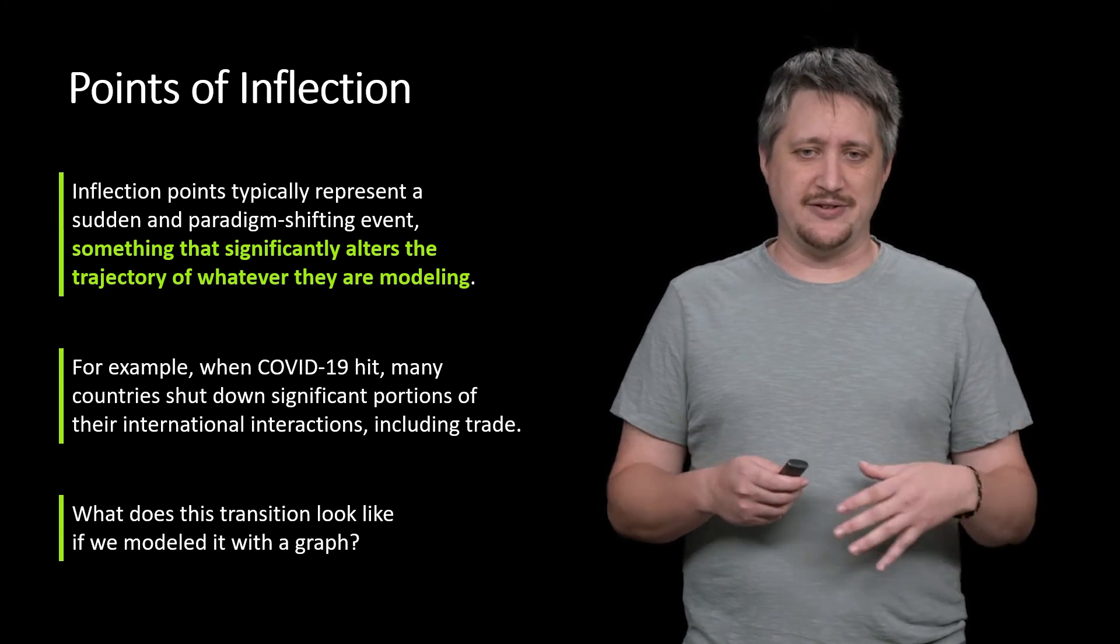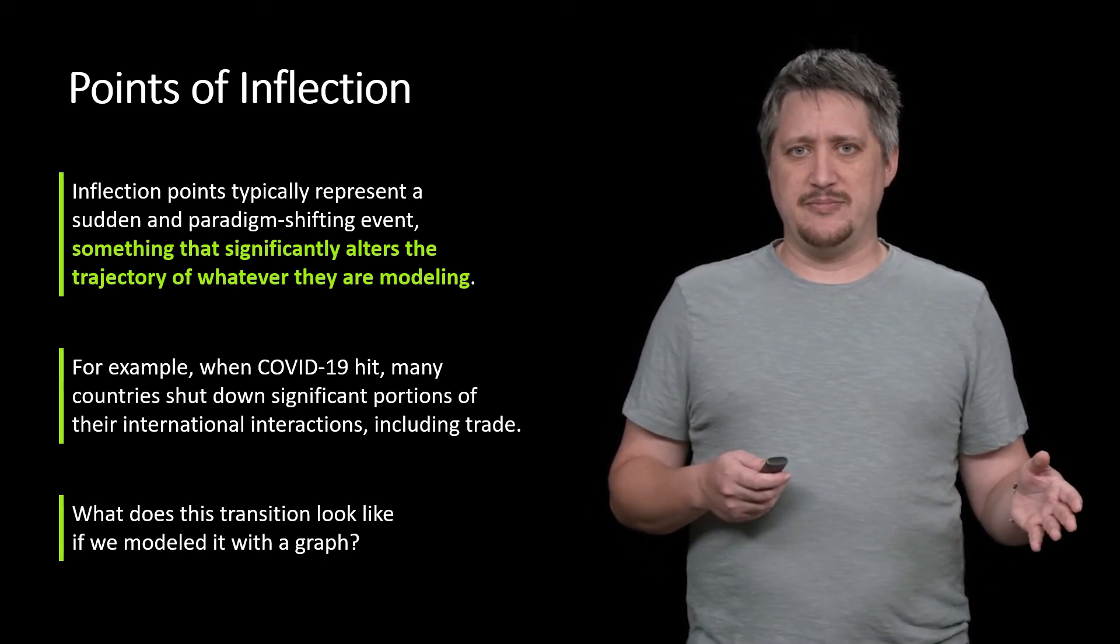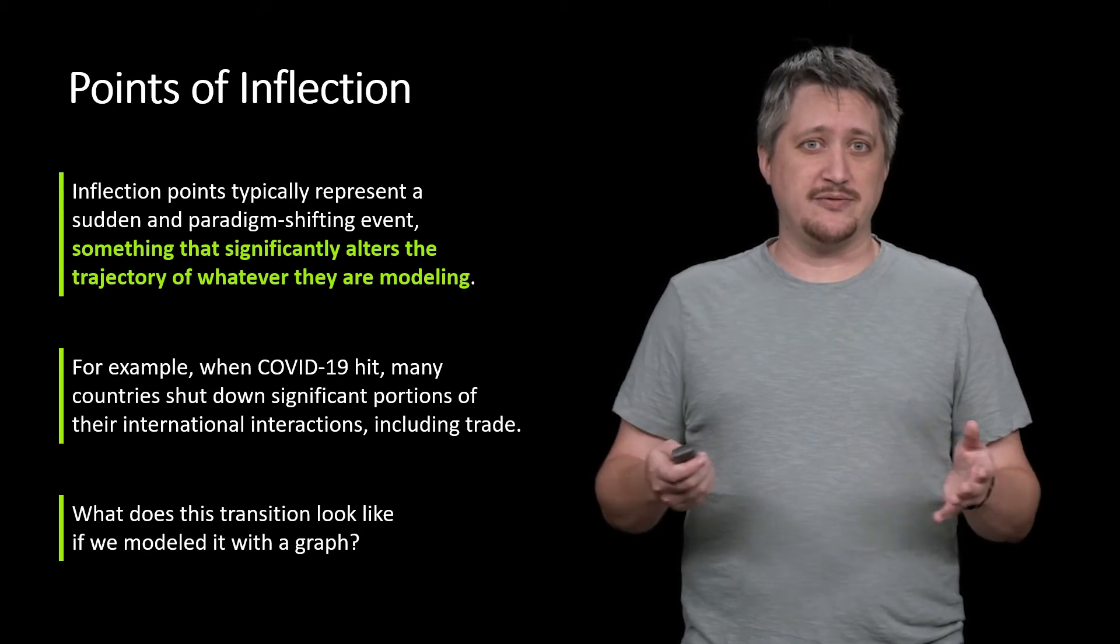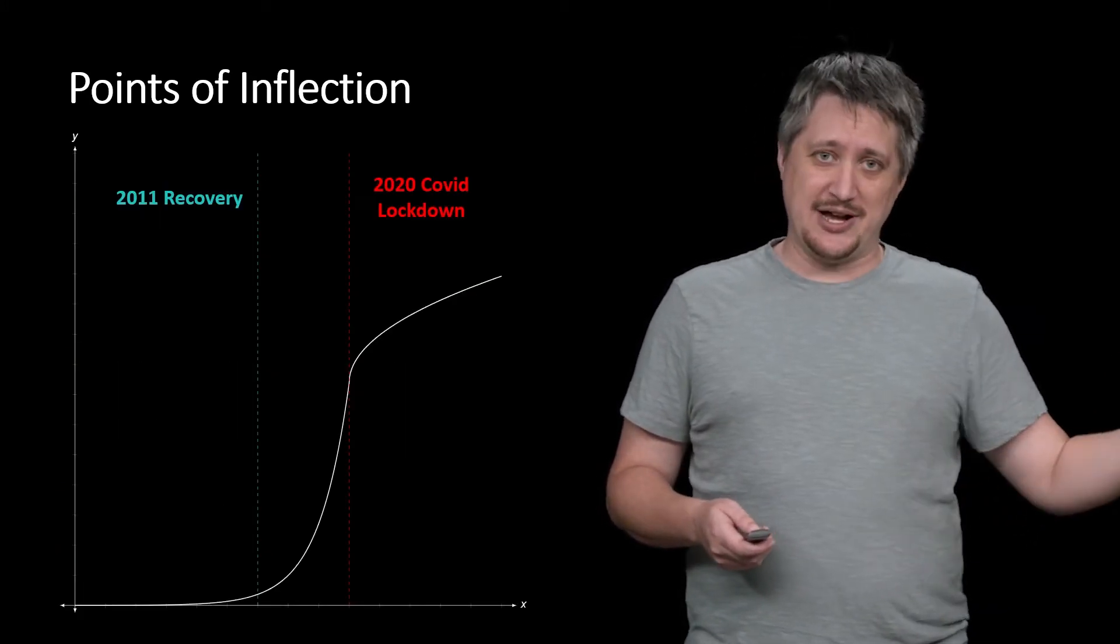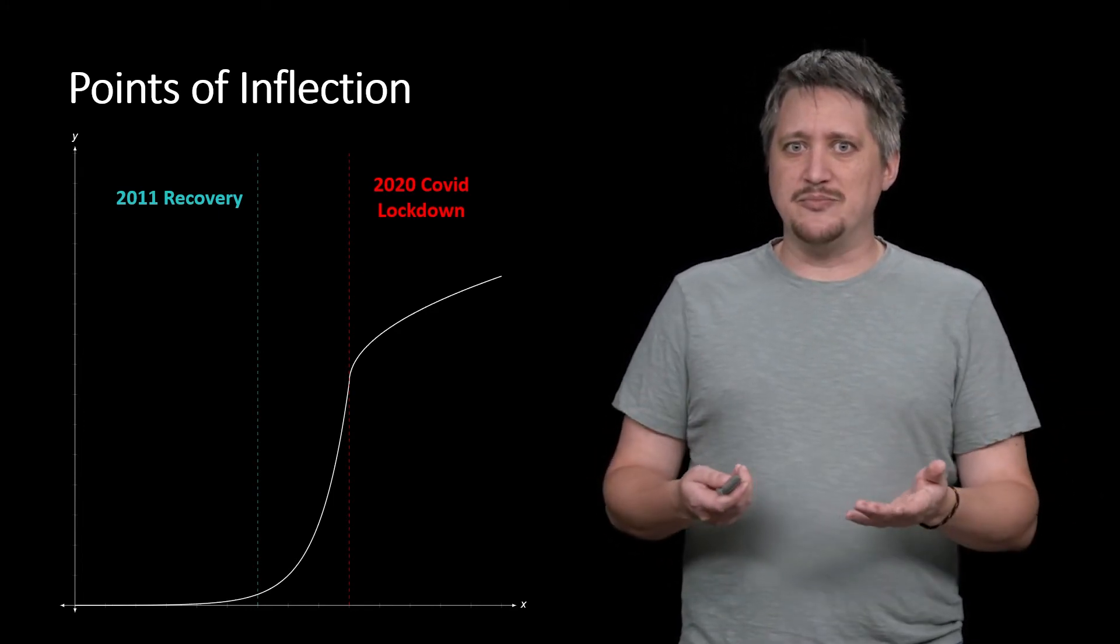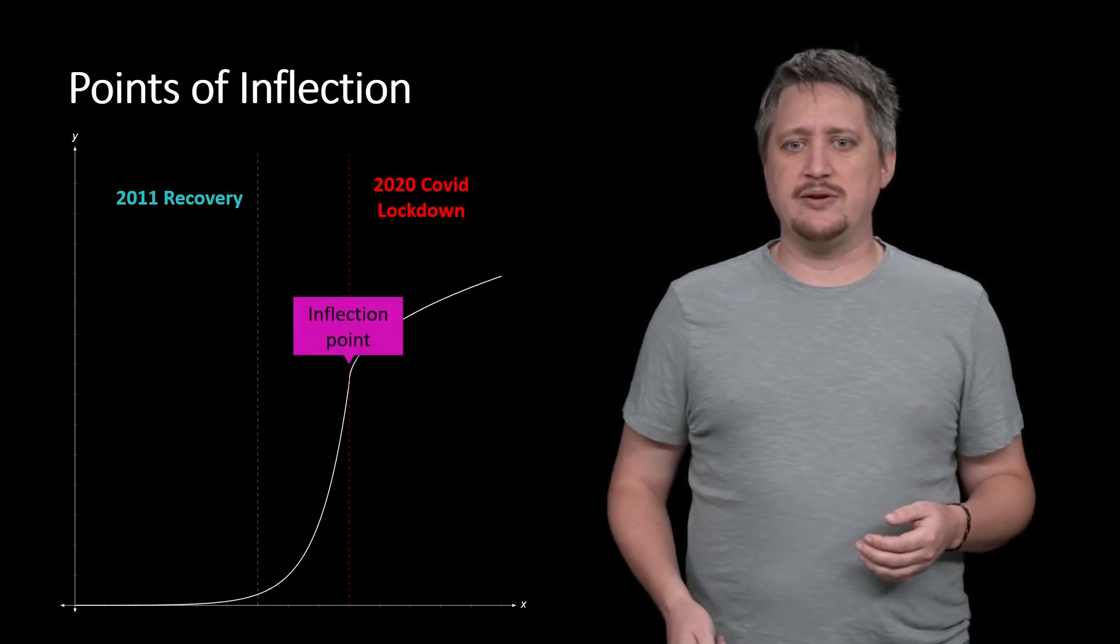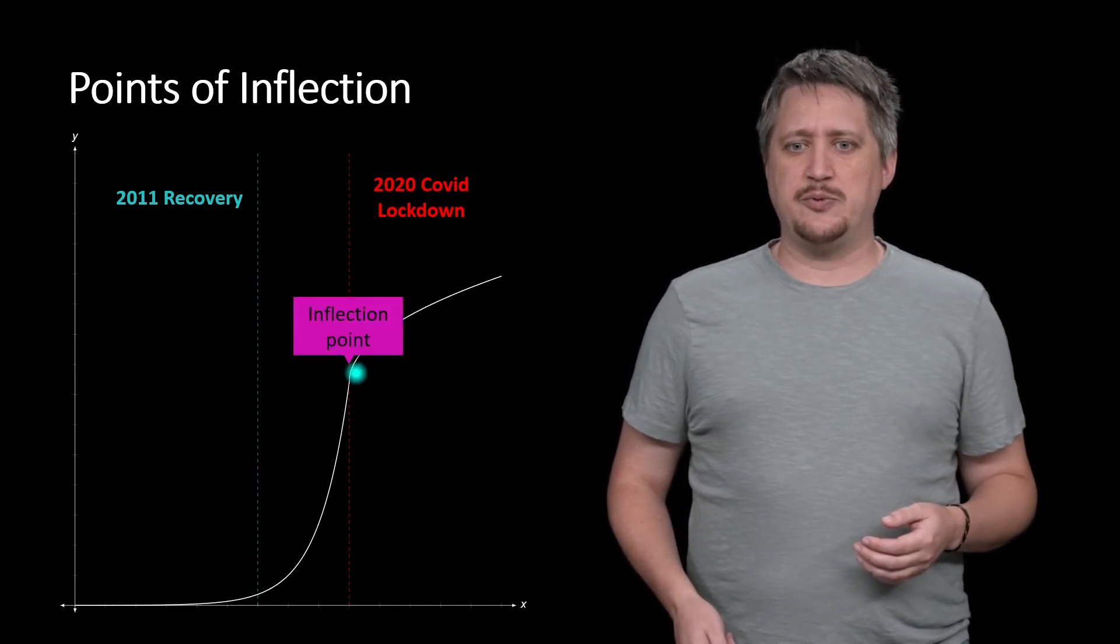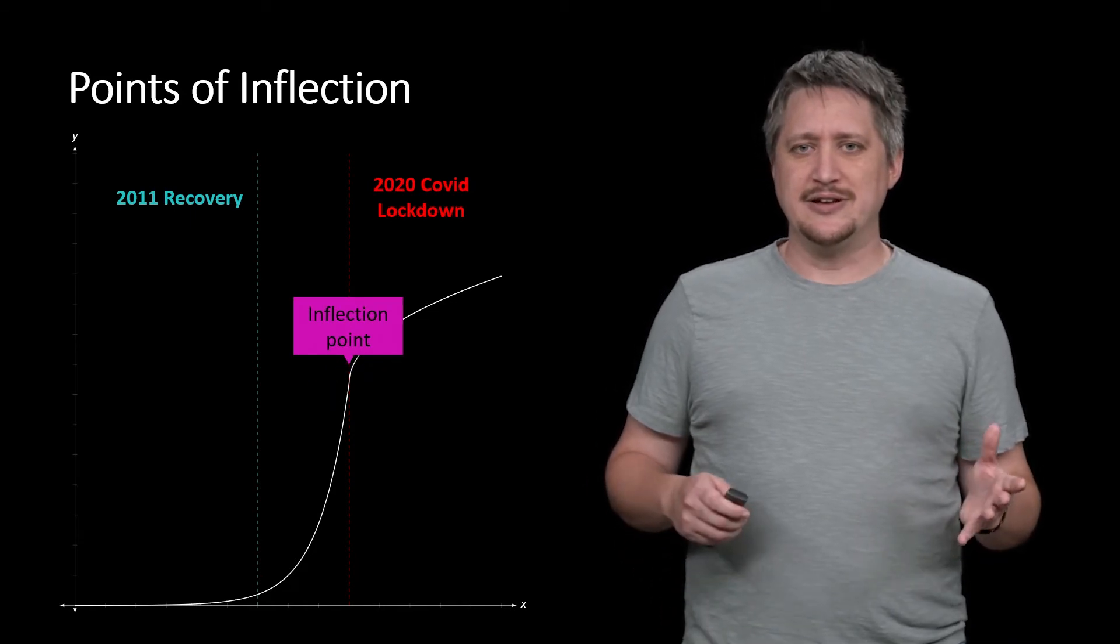So if we were to look at a graph that models trade over time, or economic growth over time, we had a recovery period from the crash when we had the 2008 crash, and then 2011, we entered a recovery period. And then 2020, we did the lockdown. So if you look at the point where that occurred, this point here, this COVID lockdown represents this sort of inflection point.